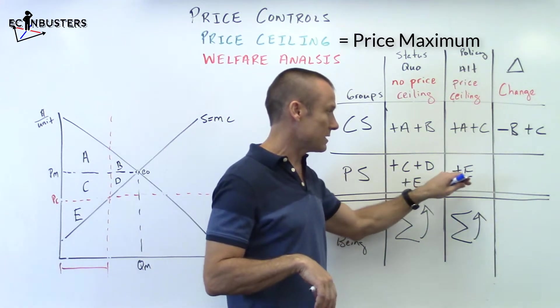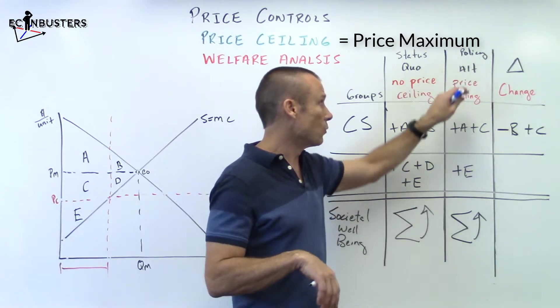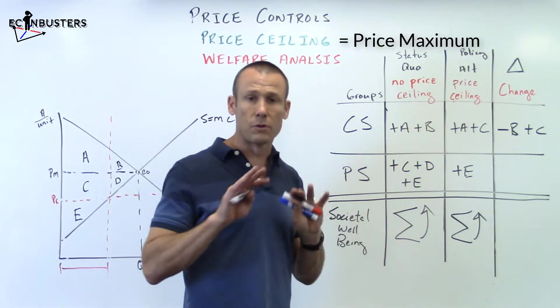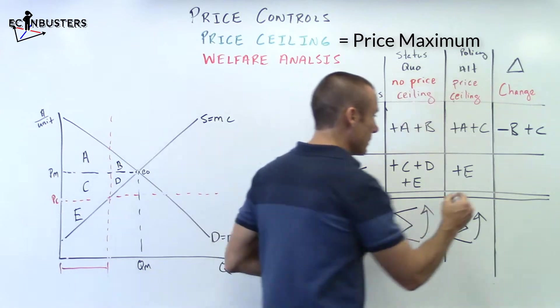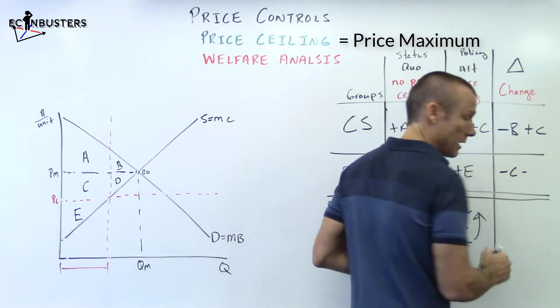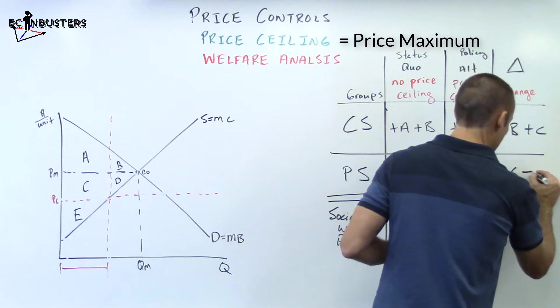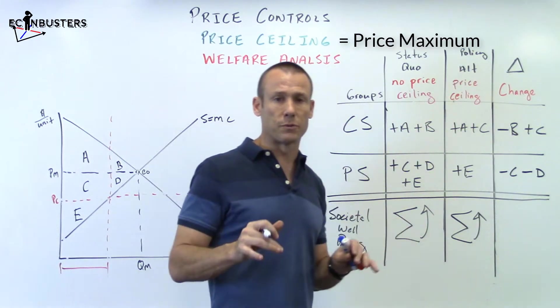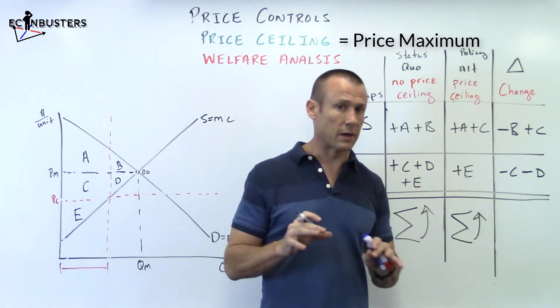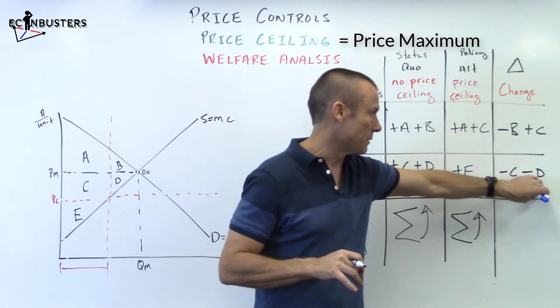Now let's show the impact on the producers. Plus C, plus D, plus E. Now they just have plus E with that price ceiling put in place. Producers, nothing but losses, right? Minus C and minus D. Nothing but losses for the producers. Producers don't like price ceilings. So minus C, minus D.